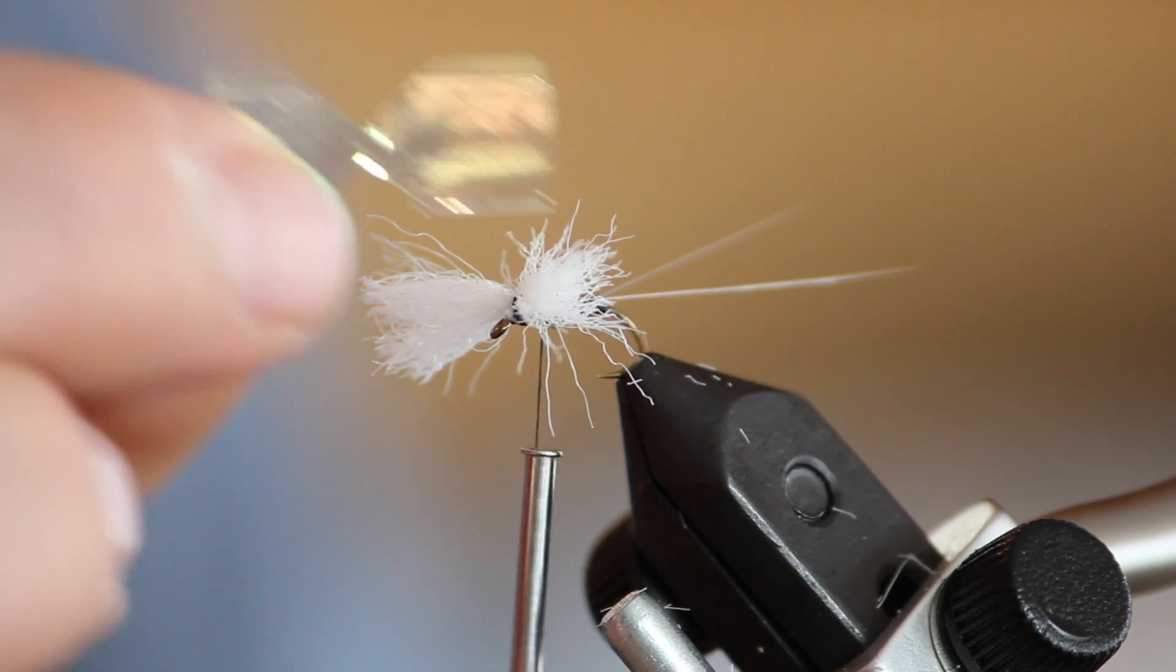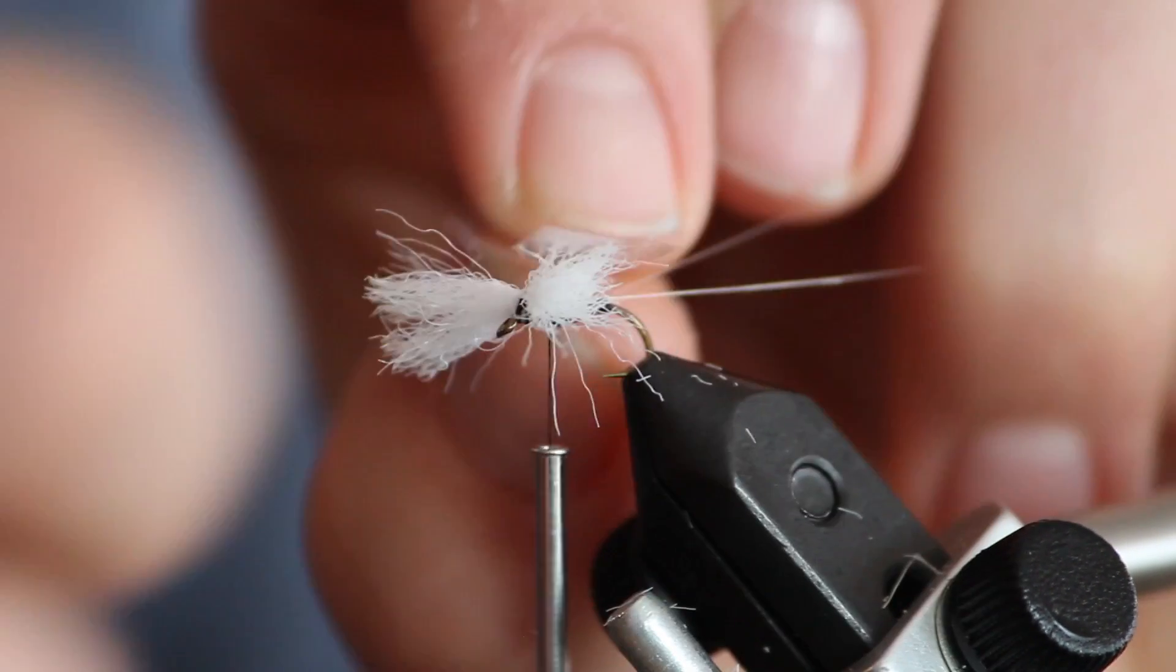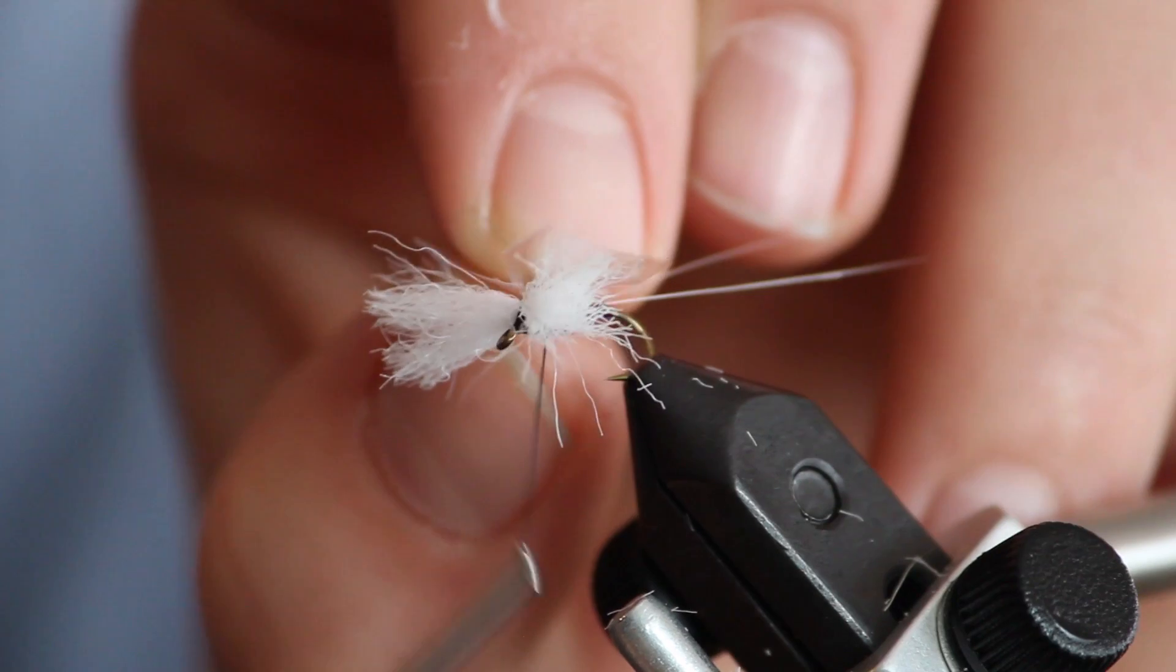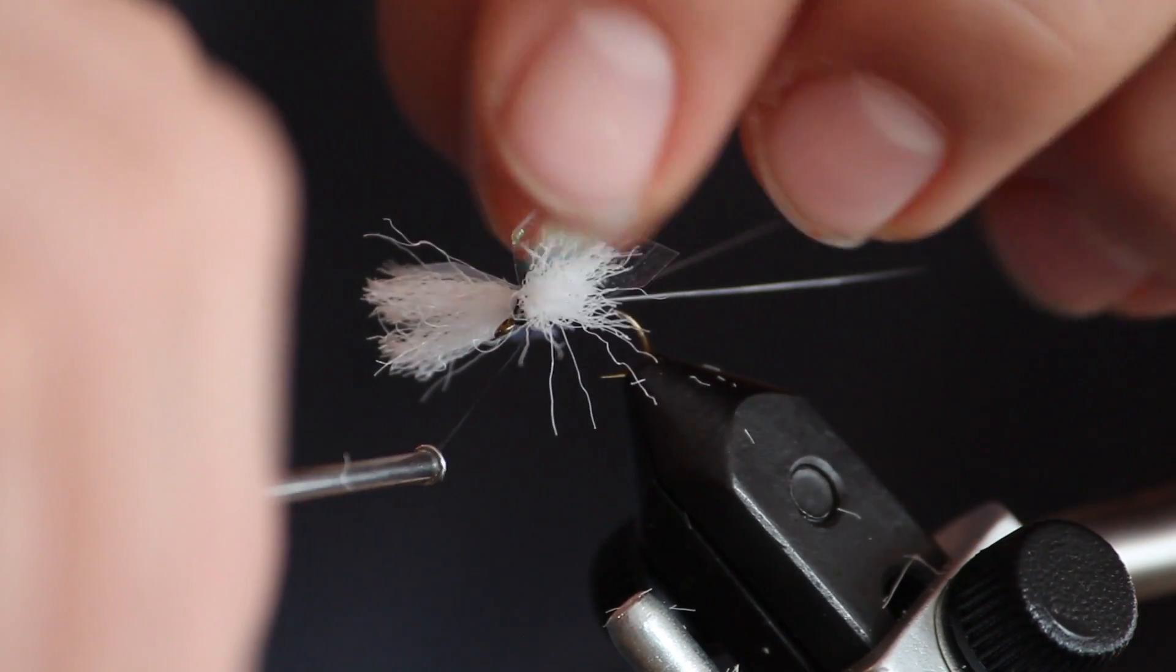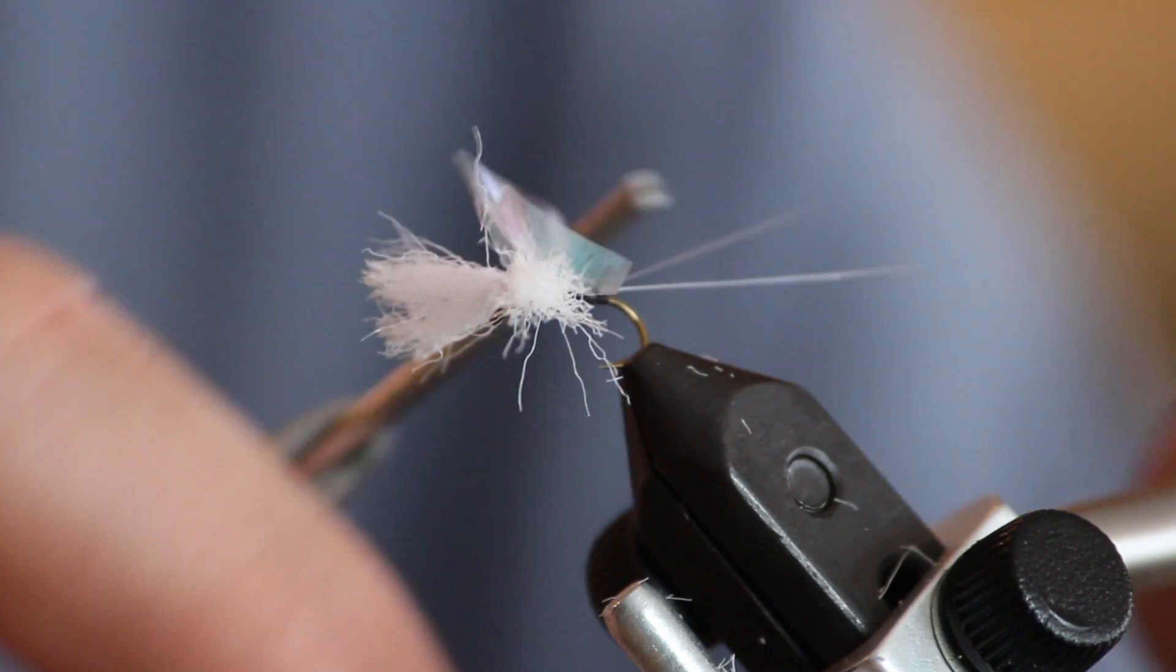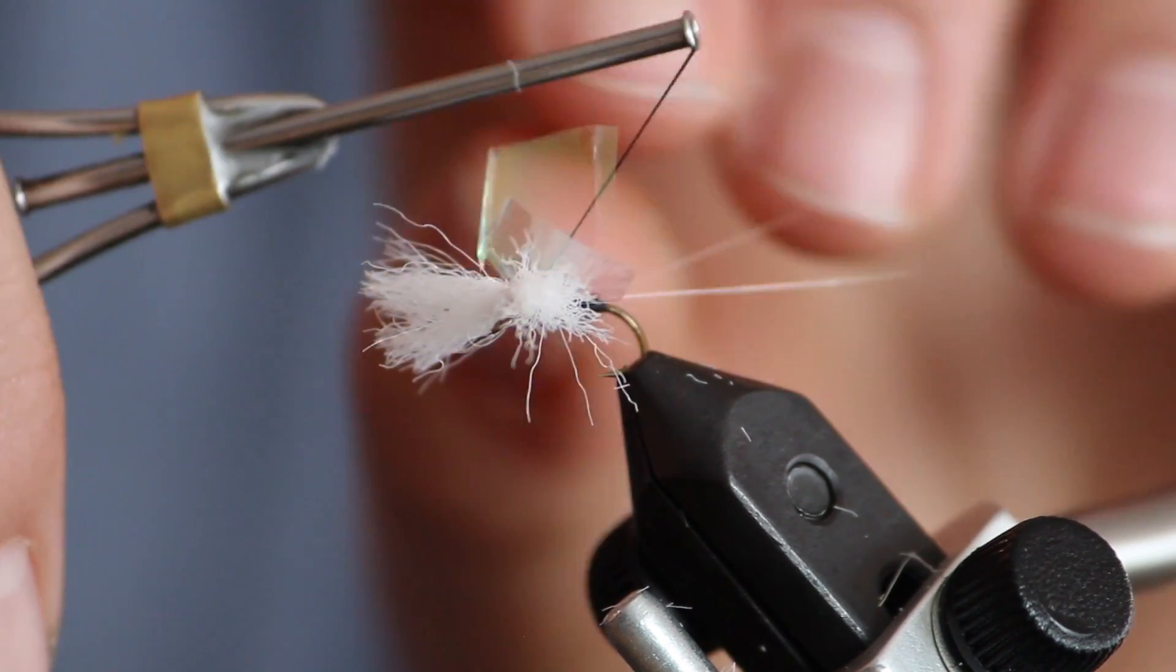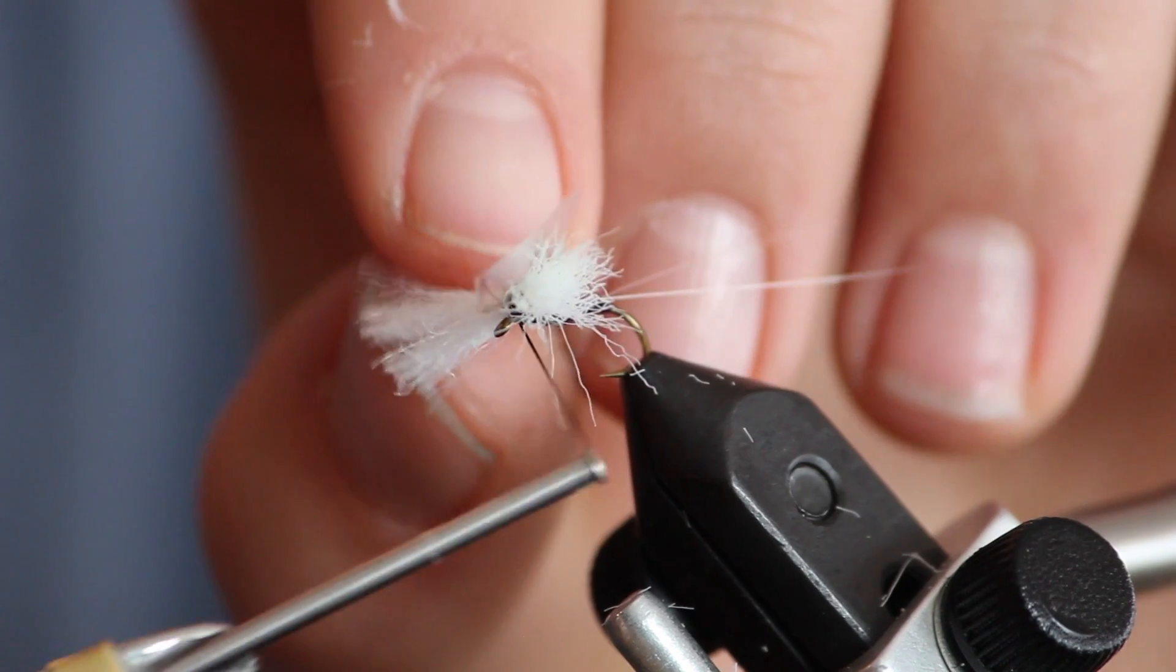Next, take pearlescent wing material and cut these into both sides. Make similar wraps as you did with your poly yarn. Get the wings so they are tight and vertical.